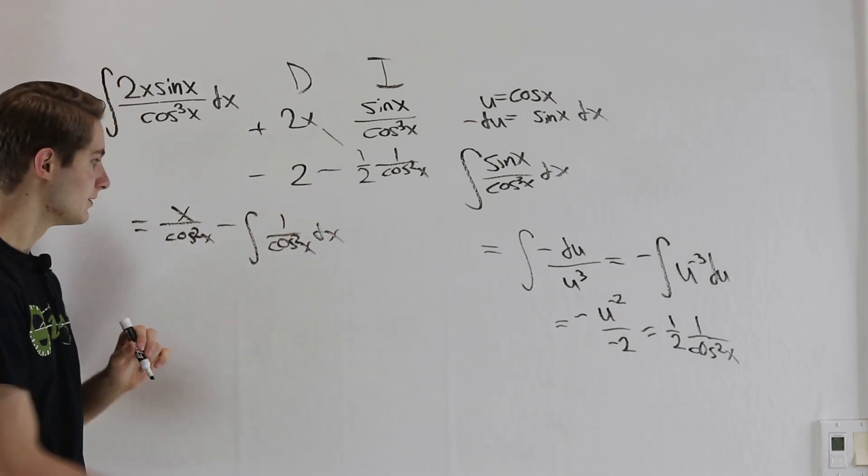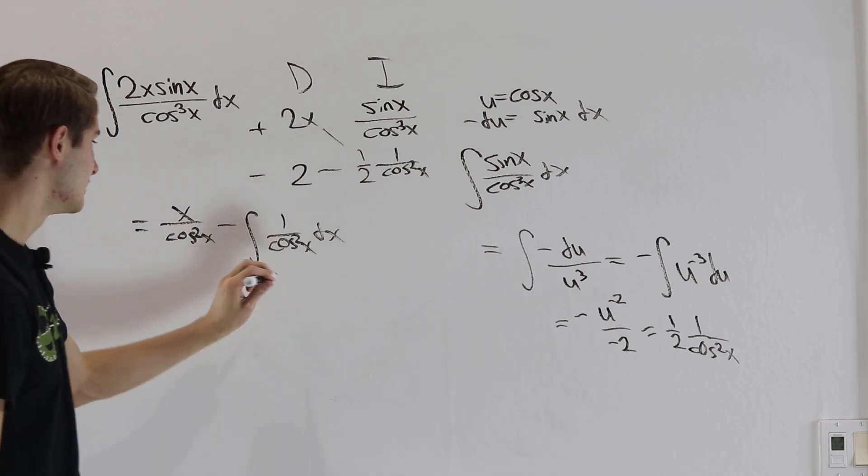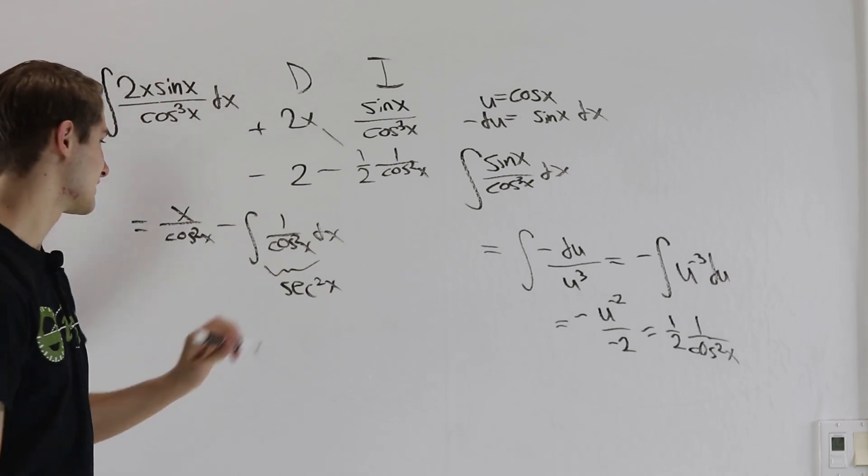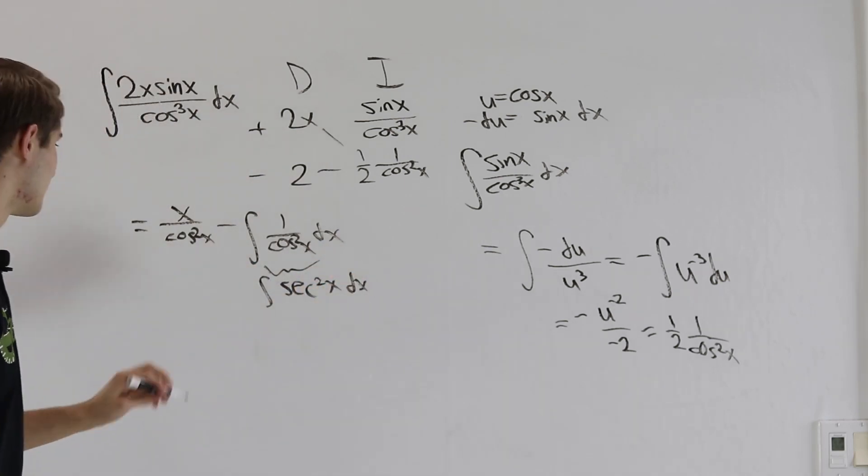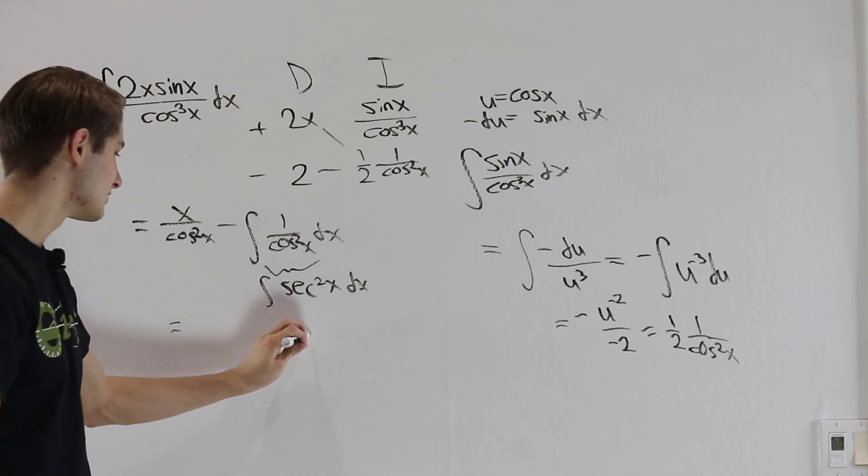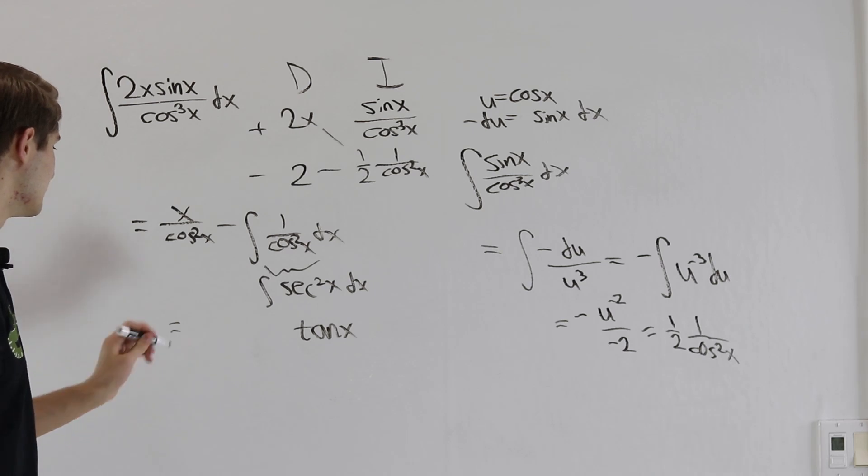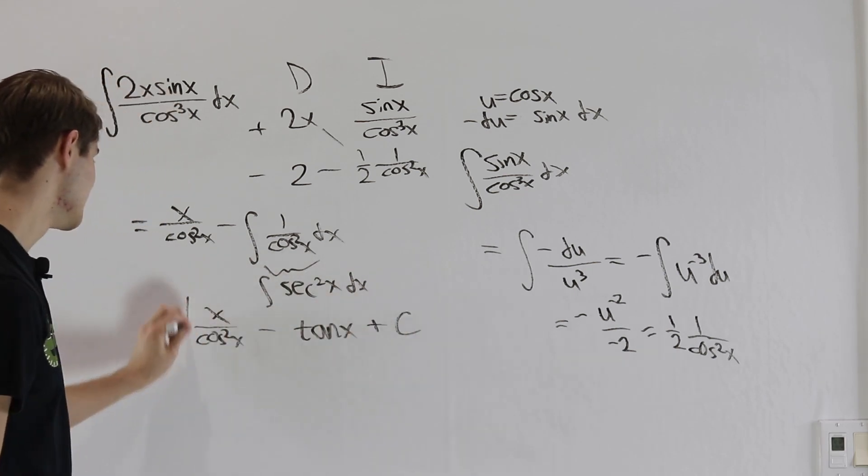And this part, when we integrate 1 over cosine squared x, the trick is just to notice that 1 over cosine squared x is exactly the same as secant squared x. And to integrate secant squared x, we just have to use our standard rules. We know the integral of secant squared is just going to be tangent x. So that means our final answer is x over cosine squared x minus tangent x plus c.